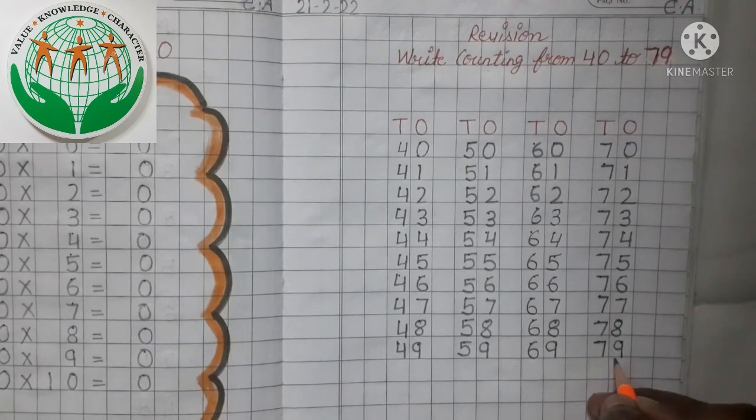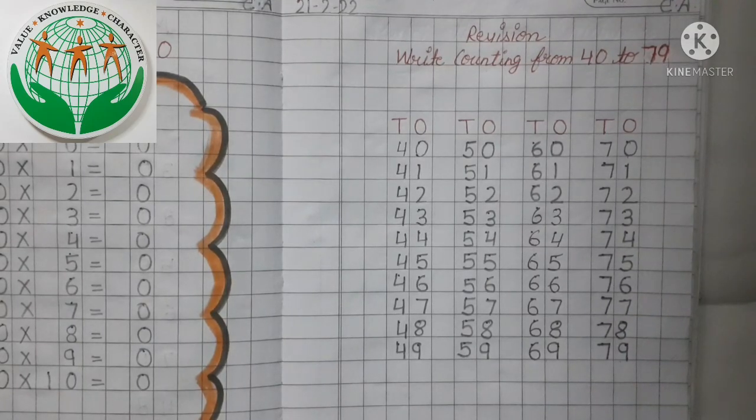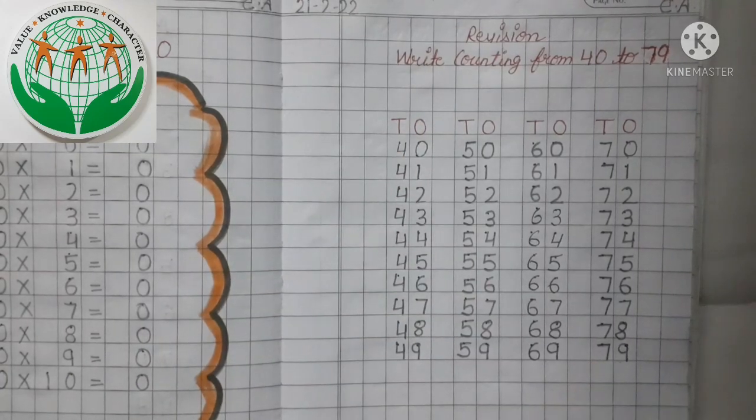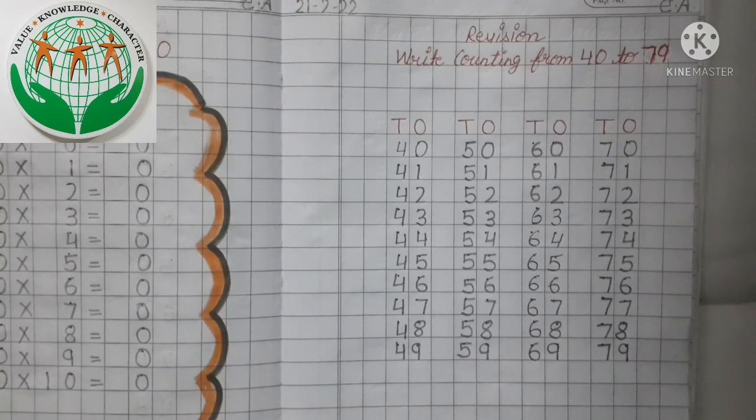So kids, this is our counting from 40 to 79. Complete this work in your math notebook. I will be back after some time. Bye bye kids, take care.